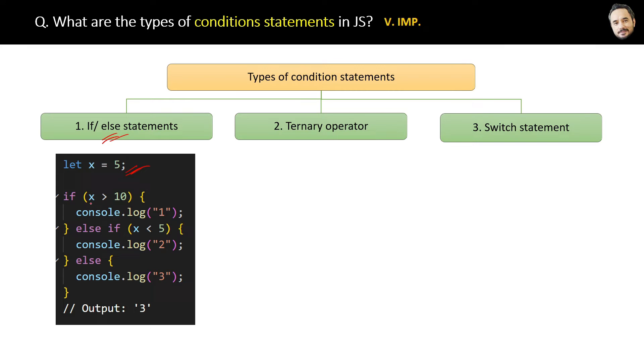Then with the help of this if condition, we are checking if x is greater than 10 or not. In this case, x equals 5, so this condition is false and the execution will not go inside the if block. Then it will go to the else if condition and check if x is less than 5, which is again not true. So finally, it will go to the else condition and print 3 as the output.